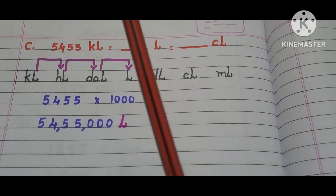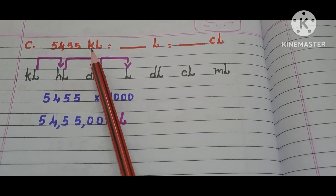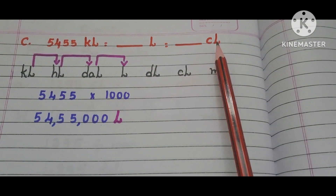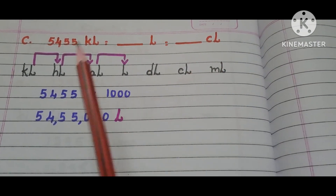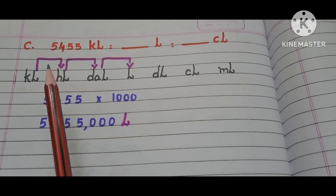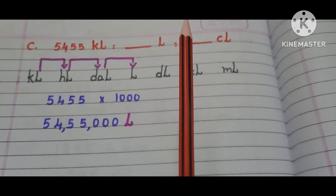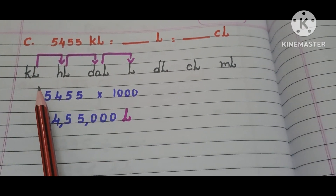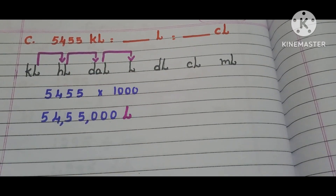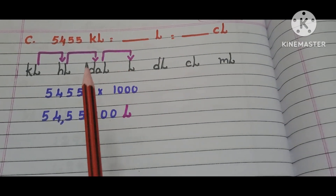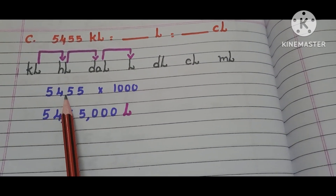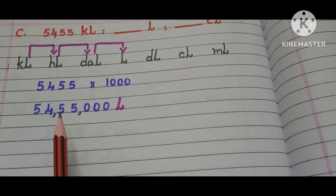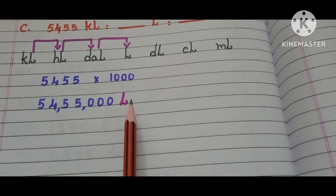Now, let us move to Part C. 5,455 kiloliters is equals to how many liters? And that is equals to how many centiliters? Here we have the table. Where are kiloliters in the table? Here it is. Where are liters in the table? Here it is. So, we have to move from left side to right side 3 steps in the table. So, we have to multiply 5,455 with 1000. Then it becomes 54,55,000 liters.